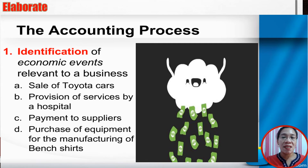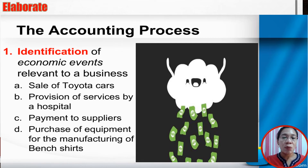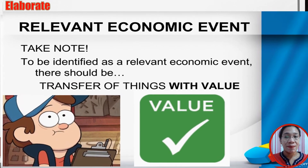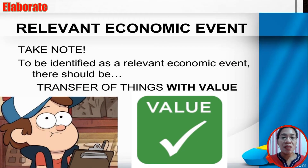The accounting process — since accounting involves steps, it is a process. The first step is identification of economic events relevant to a business. Examples include sale of cars, provision of services by a hospital, payment to suppliers, and purchase of equipment for manufacturing. A relevant economic event is an event or transaction that involves money or financial character — there should be a transfer of things with value.